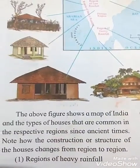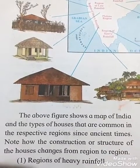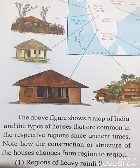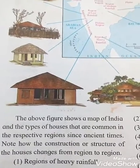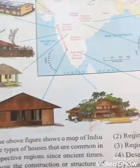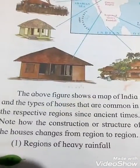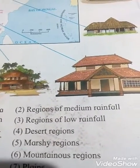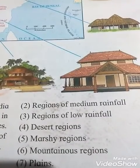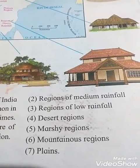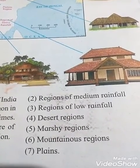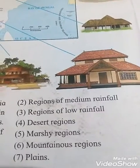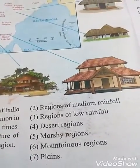The above figures show a map of India and the types of houses common in respective regions. Note how the construction or structure of houses changes from region to region. The seven regions are: heavy rainfall, medium rainfall, low rainfall, desert, marshy, mountainous, and plain.